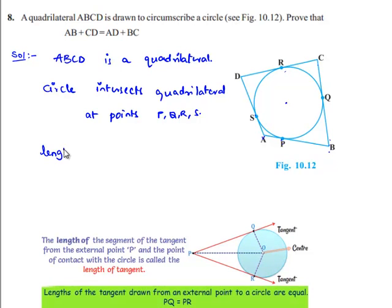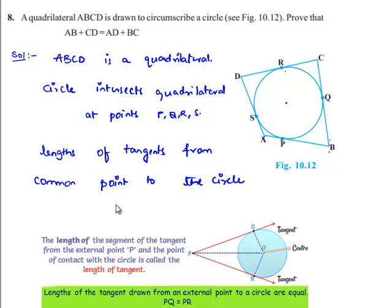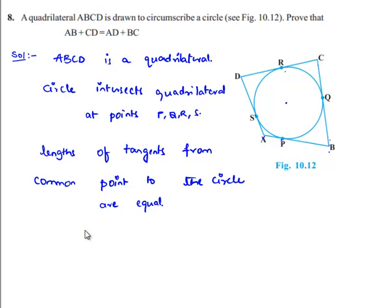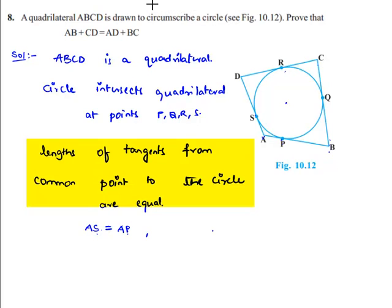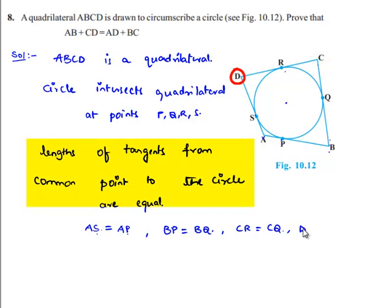We know that lengths of tangents from a common point to the circle are equal. From point A: AS equals AP. From point B: BP equals BQ. From point C: CR equals CQ. From point D: DS equals DR.